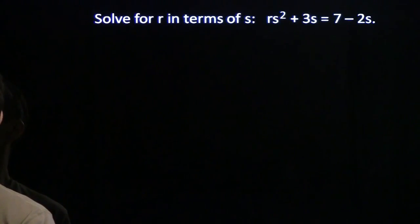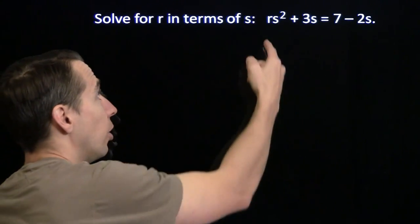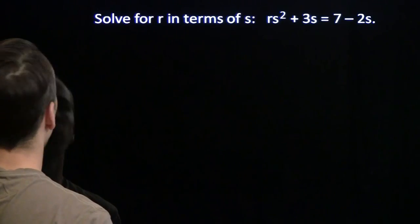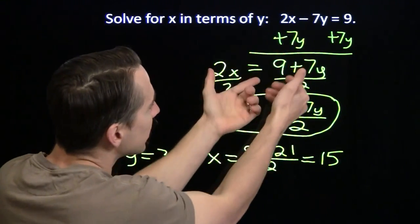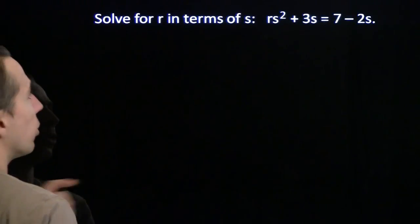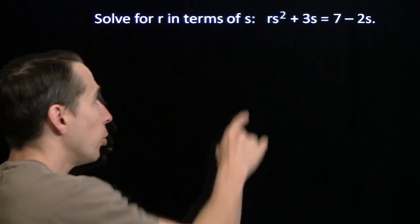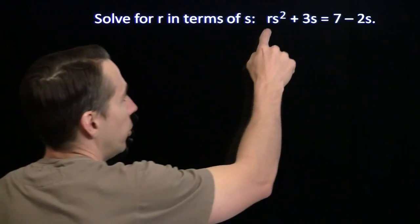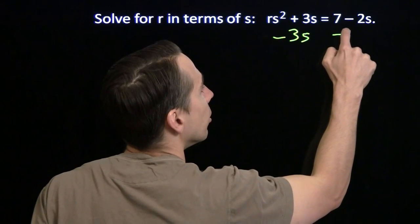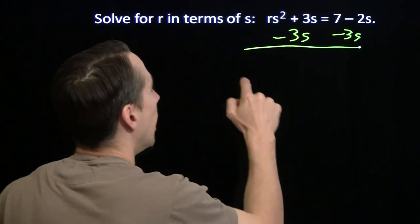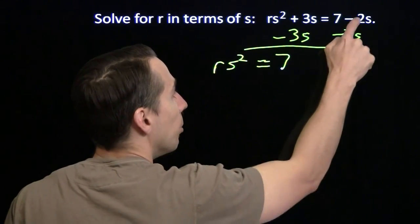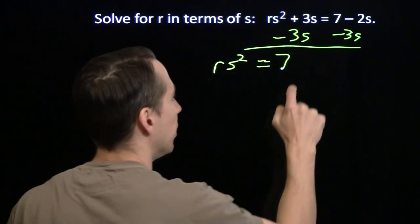Now let's try a slightly more complicated one here. We're going to solve for r in terms of s. Now let's look back here at what we did before. Our first step was to isolate the part of the equation that has x in it. So that's what we'll do here as well. Our first step will be to isolate the term that has the r. And we'll do that by subtracting 3s from both sides. And we'll have rs squared equals 7 minus 2s minus 3s, that's minus 5s.